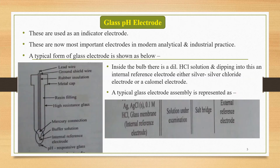The next important electrode used in pH determination is called the glass pH electrode. It is used as an indicator electrode and is now the most important electrode in modern analytical and industrial practice. A typical form of glass electrode is shown below.